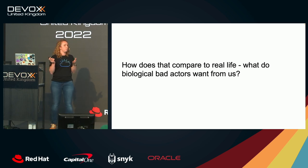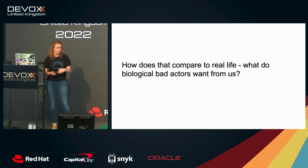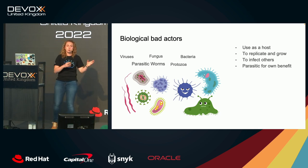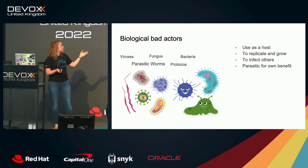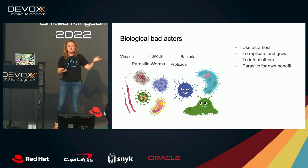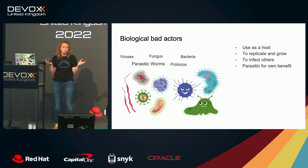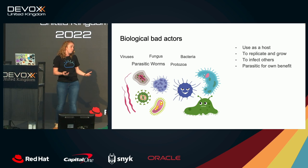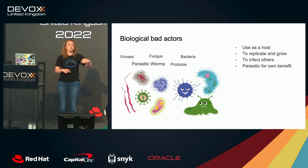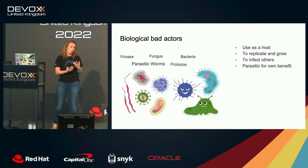So where does biology come in? There are loads of different biological bad actors, just like in software, and they all have different motivations. We've got viruses, fungus, parasitic worms, protozoa, and bacteria. Your body is a really comfortable place — great temperature, endless resources, food, comfort. So it's a fantastic home for them. They might use you just as a host to replicate, or use you to infect others.